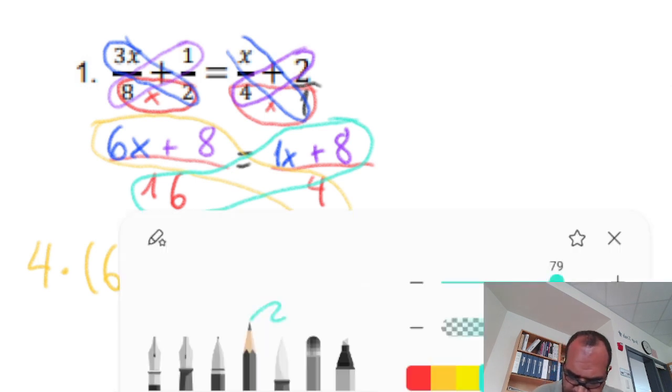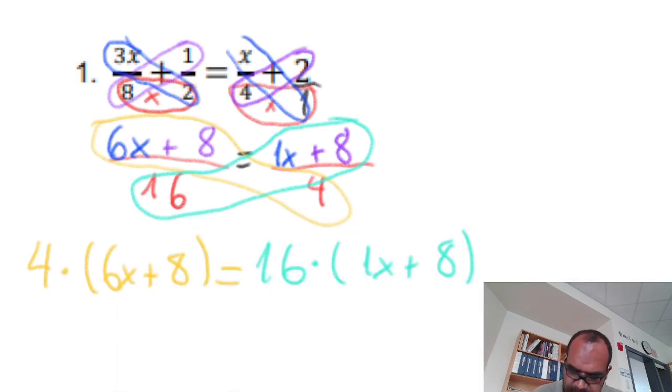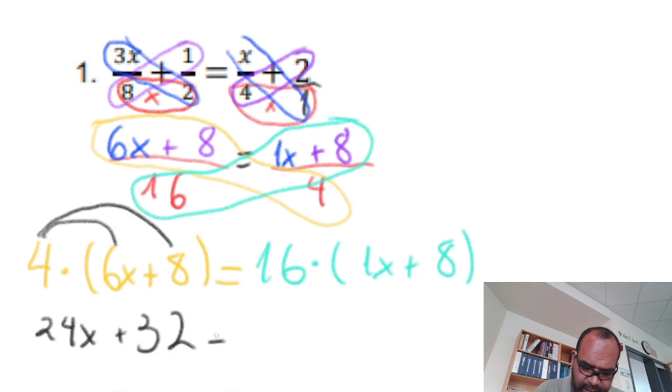Let's just solve right now this. Distributive property. It is 4 times 6, 24x. 4 times 8, it is 32. Equals. 16 times 1, it is 16x plus 16 times 8.